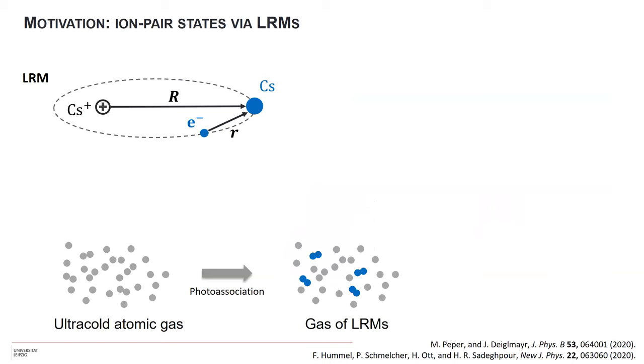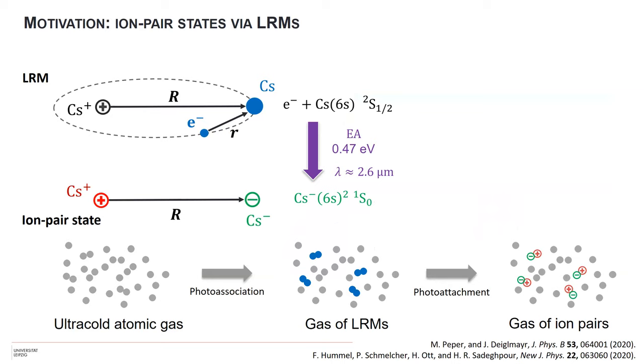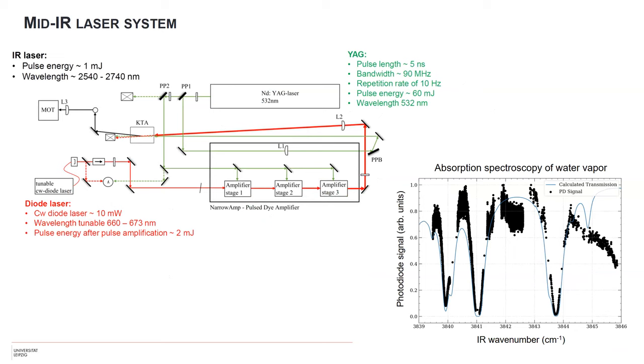I have a few minutes left so I will be brief on this. The motivation is to transfer this long-range Rydberg molecule state into an ion pair state by driving that stimulated transition down into the phase space of polar nuclear dimers, and then transform this gas of long-range Rydberg molecules into a gas of ion pairs. We built up a laser system for that which gives us nice pulses tunable in the relevant range. We can calibrate the frequency of that.